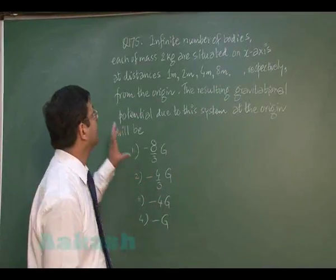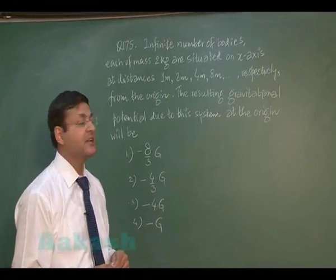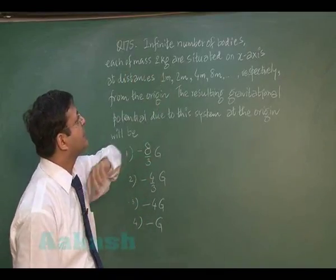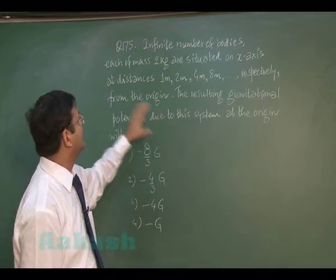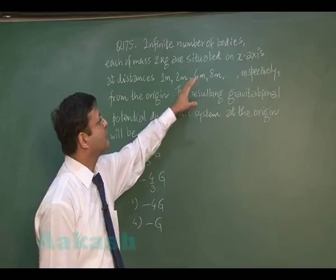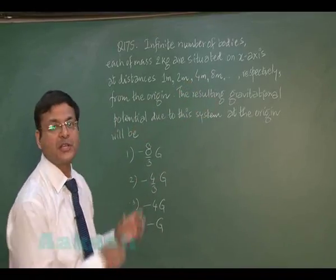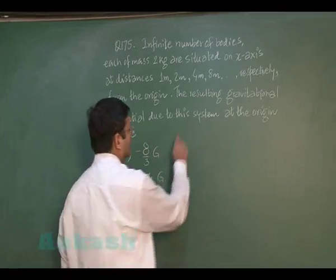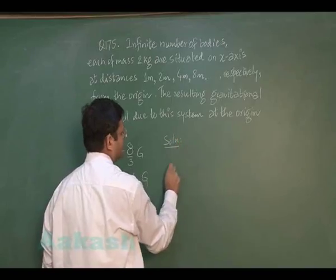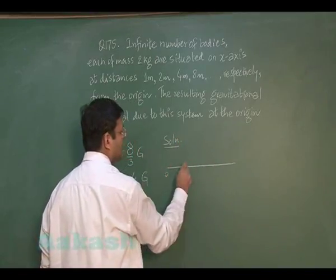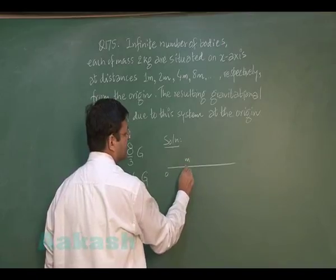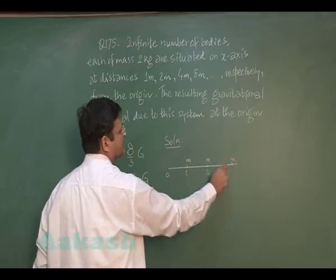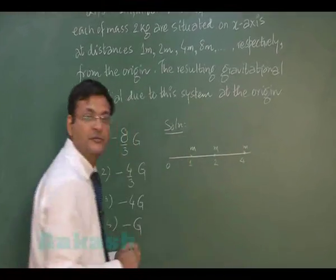Question 175 is again based on gravitation. You are expected to find the gravitational potential at the origin. Infinite bodies each of mass 2 kg are situated on the x-axis at distances 1 m, 2 m, 4 m, 8 m, and so on from the origin. This is a kind of series addition, and the resulting gravitational potential is demanded at the origin.